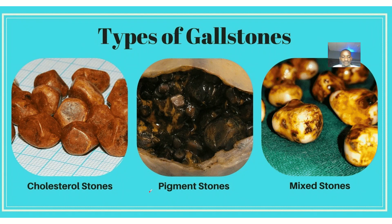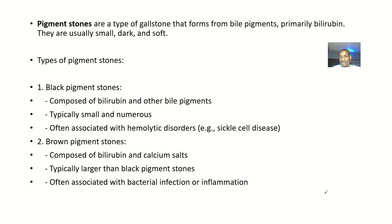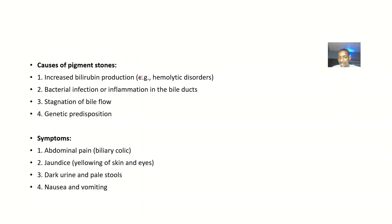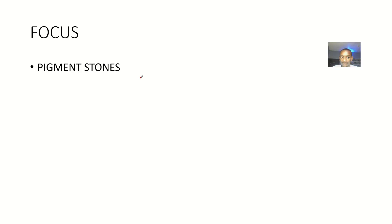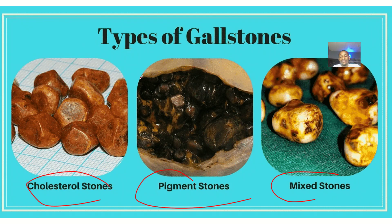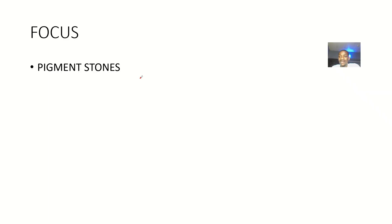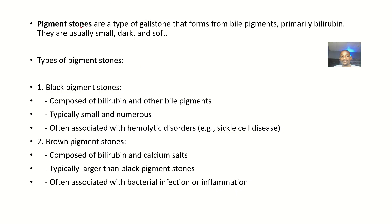We'll discuss pigment stones, cholesterol stones, and mixed stones. For pigment stones, I'll talk about the types, causes, symptoms, treatments, and complications. Pigment stones are a type of gallstone that form from bile pigments — primarily bilirubin, though they can be mixed with some other stuff.